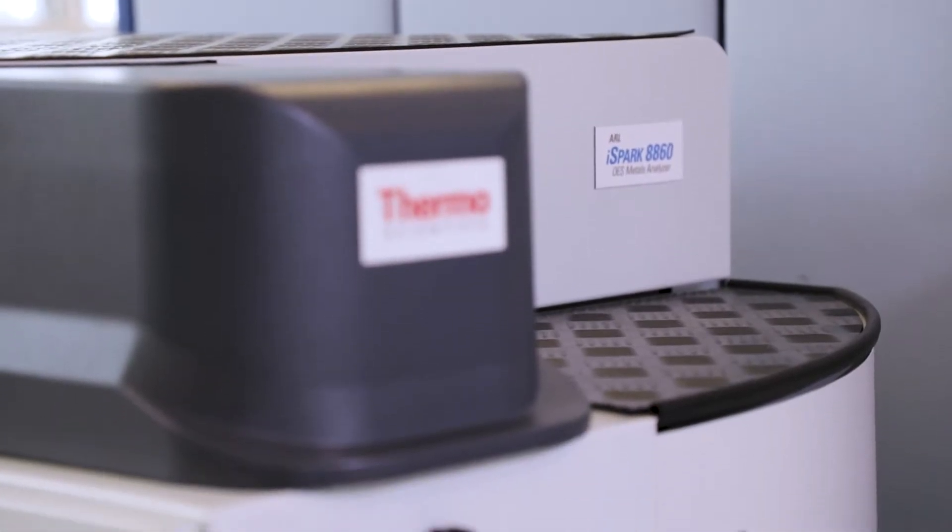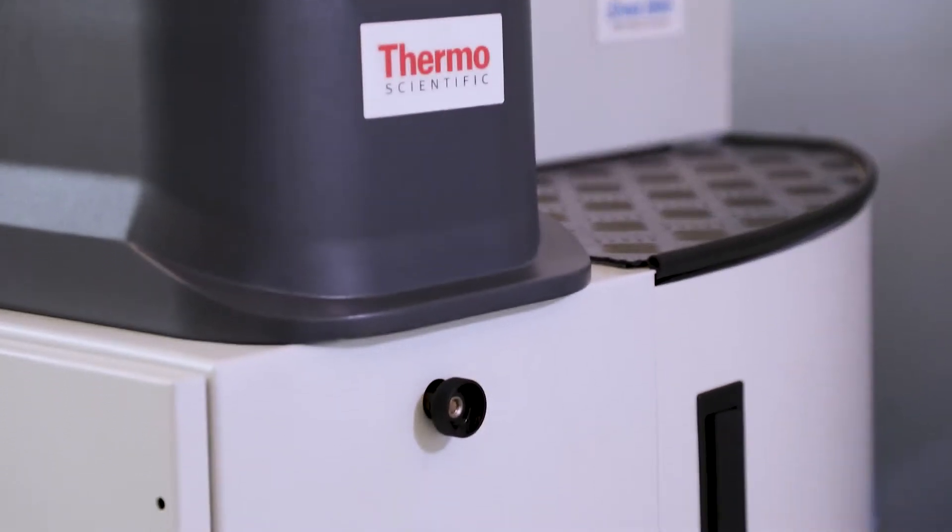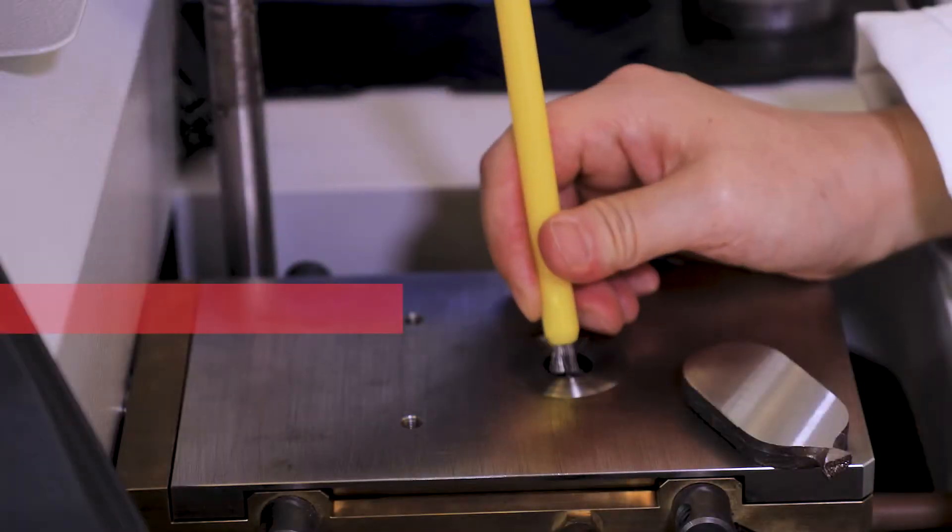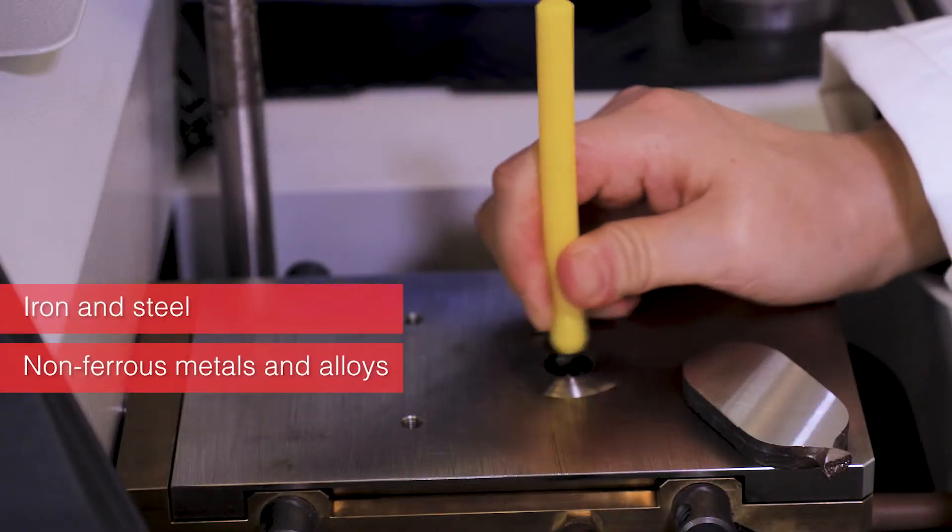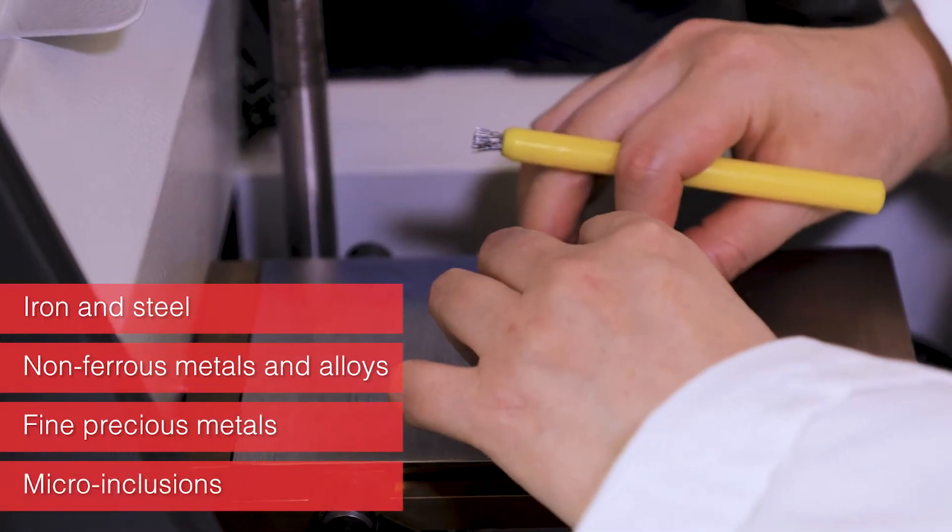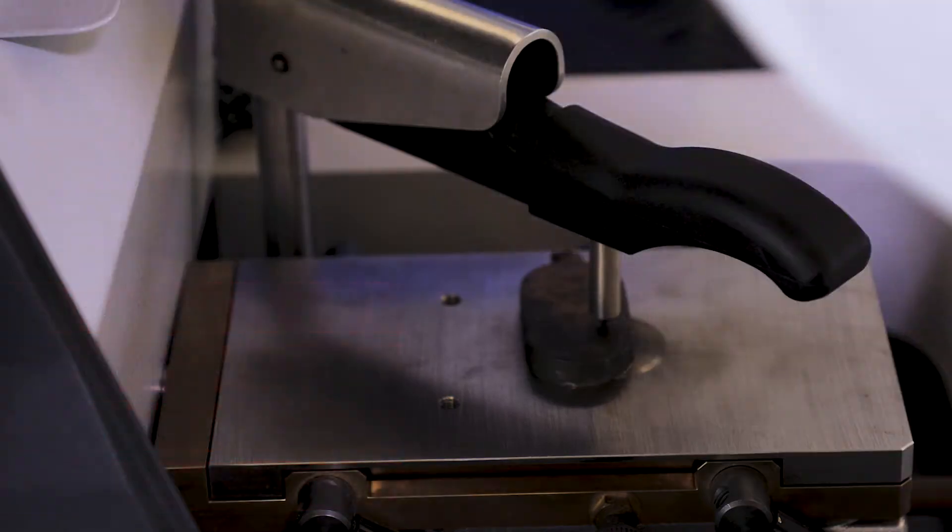The ARL iSpark Metals Analyzer is the answer to all your analytical needs, whether for incoming material or metal quality control and production analysis. It can analyze all the elements necessary in your current and future applications, delivering reliable performance 24-7, year after year.